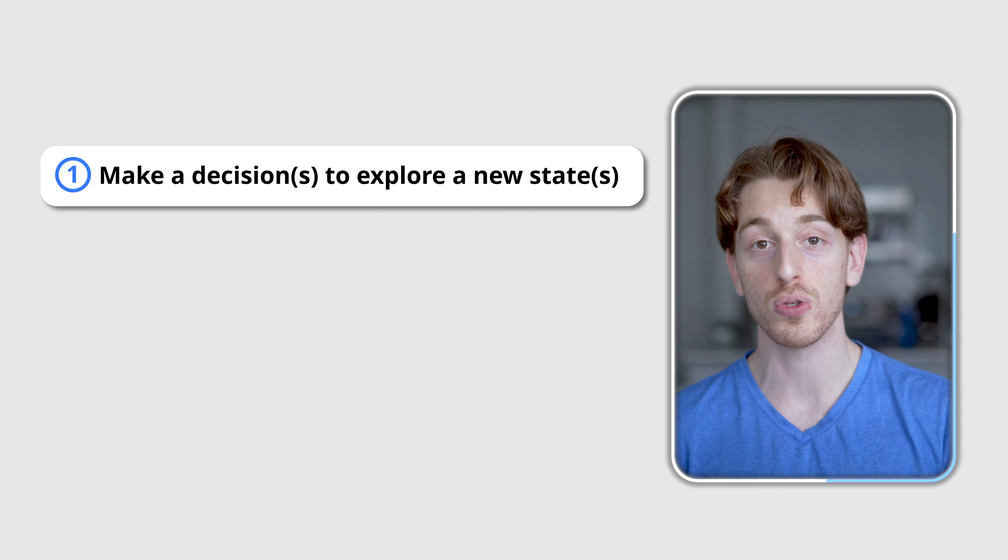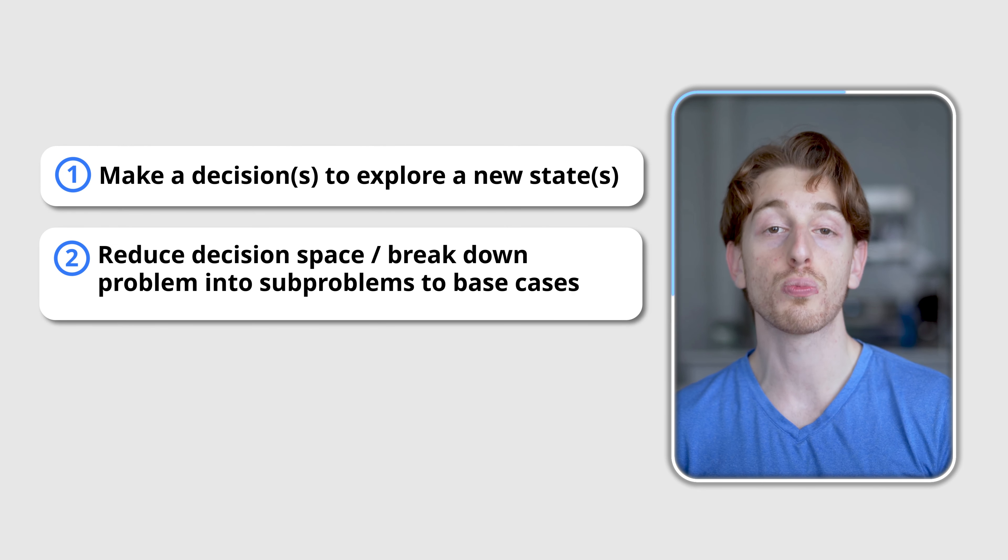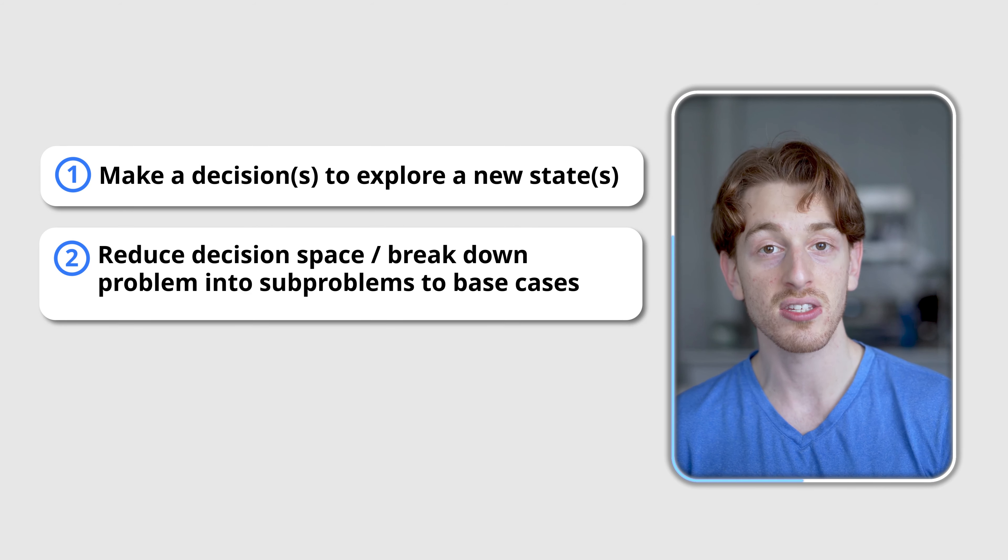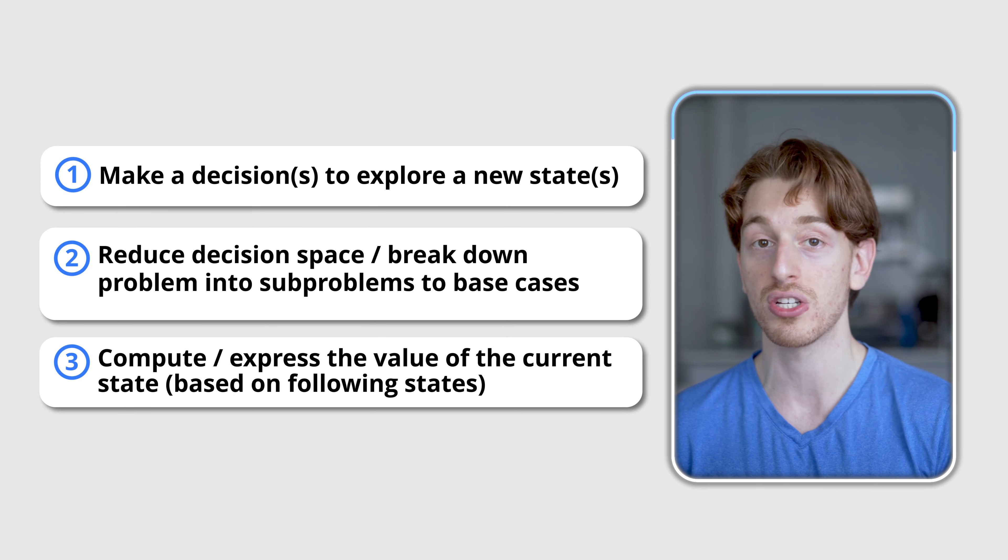In recursion, we make a decision to explore a new state and reduce the decision space or break down the problem into a smaller problem until we reach the base case and compute the value of the current state. That's it. Let's break this down with an example.